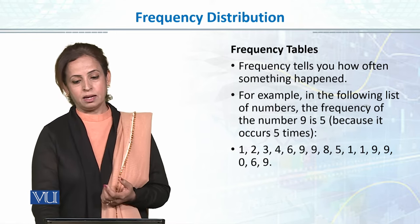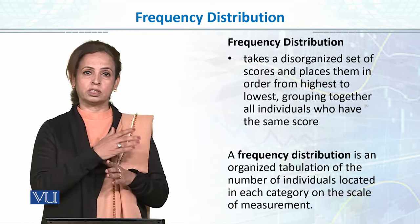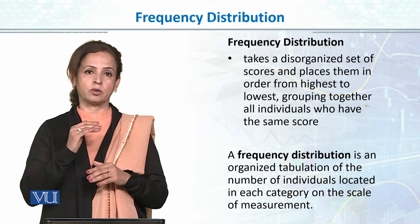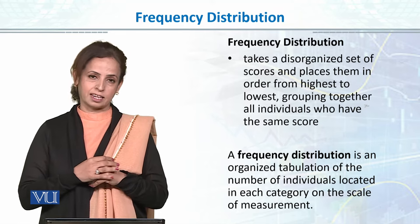So, we make frequency distribution by organizing scores in one column, and then frequency for each score, that is how many times each score is occurring, in a second column.